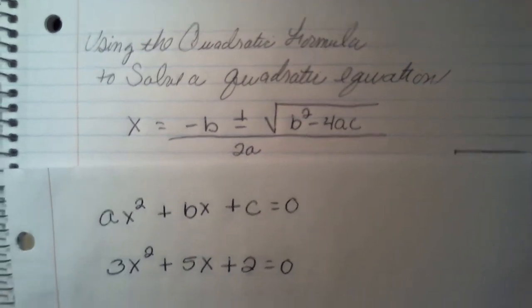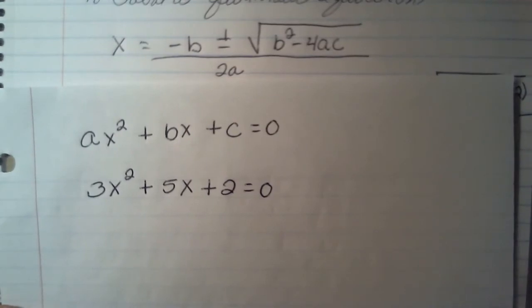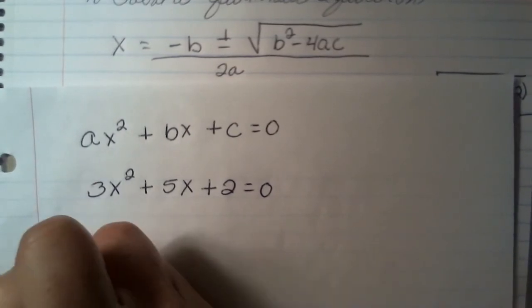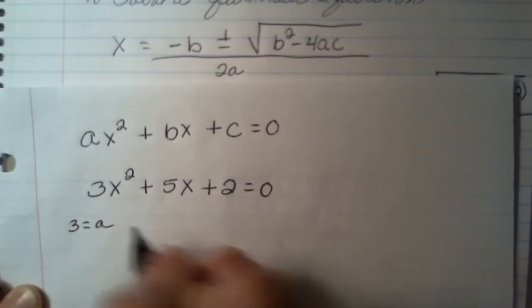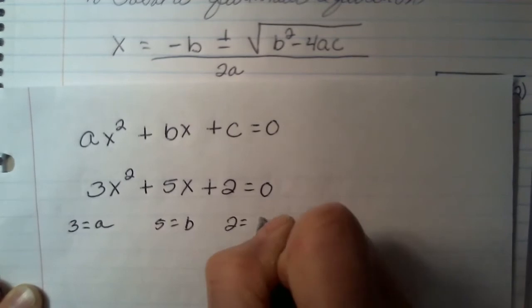So every coefficient within the equation represents one of the letters. In the equation that I'm given, 3 represents the a, 5 represents the b, and 2 represents the c.